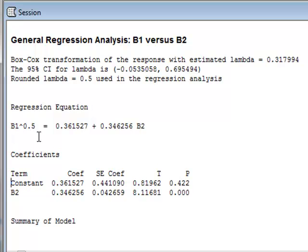This will give a regression equation of B1 to the power of 0.5, which is the same as the square root of B1, equal to a constant of 0.361 plus 0.346 times B2.